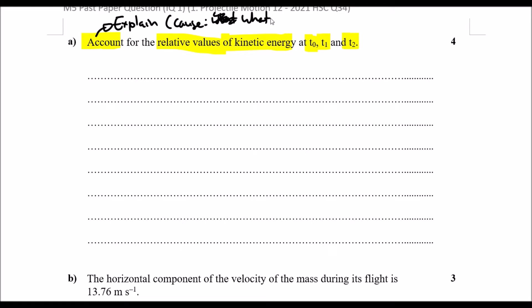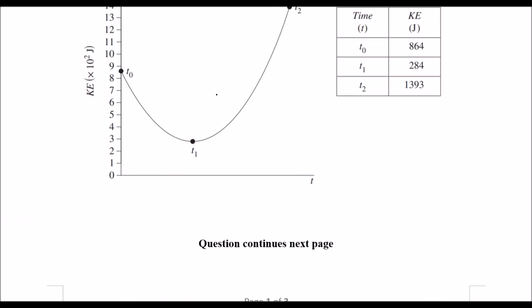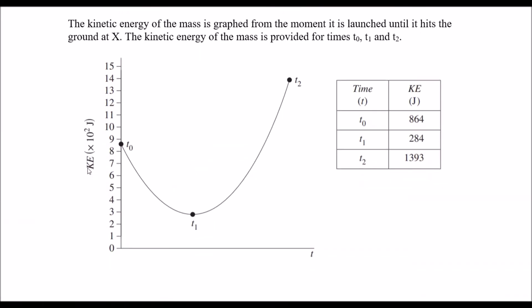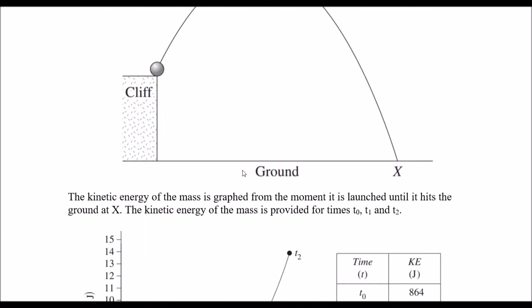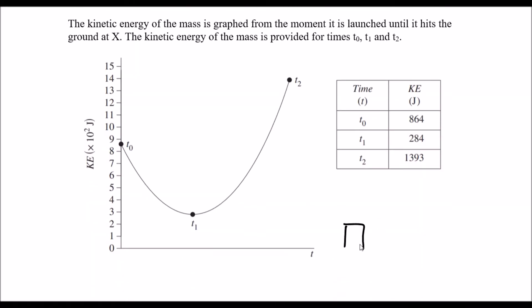The cause is what causes the shape of the graph and the effect is the shape itself. So we want to explain how the relative values of kinetic energy at t0, t1, and t2 come about. This is our kinetic energy diagram — the ball launches here, reaches peak at t1, and drops to t2. So t0 is the launch, t1 is peak height, and t2 is when it lands.